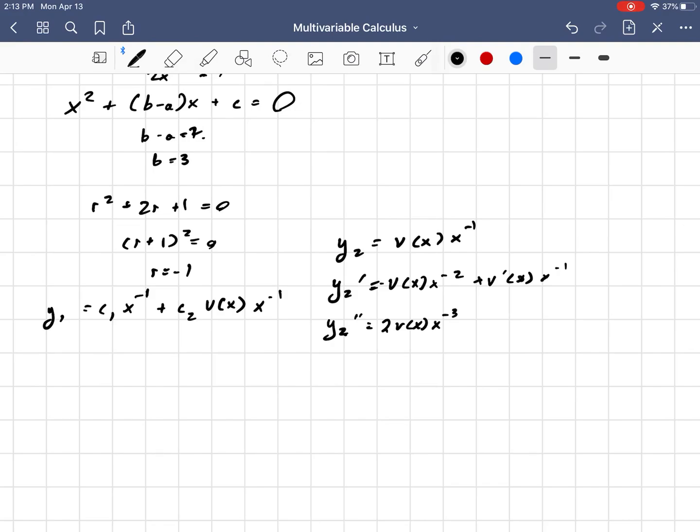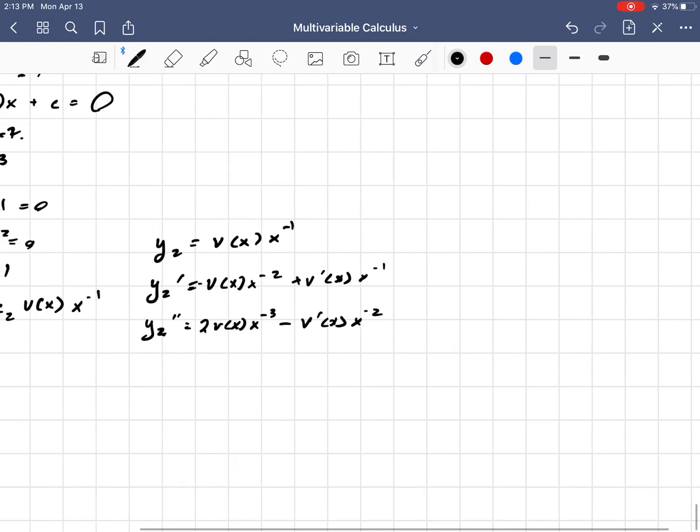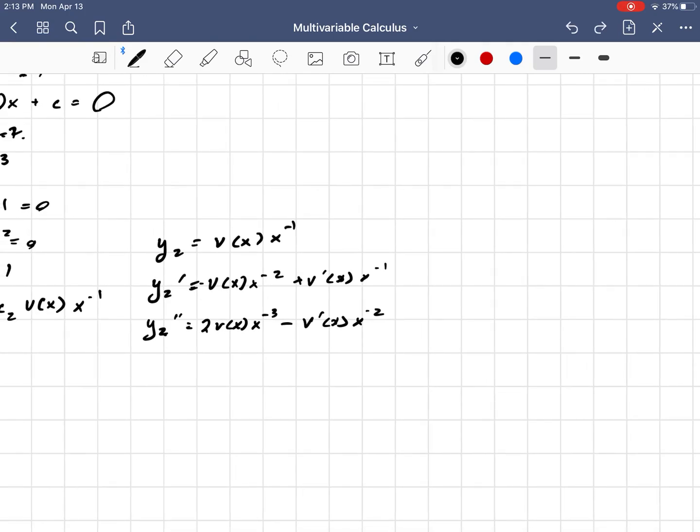Y₂'', or y₂ double prime, is 2v(x)x⁻³ - v'(x)x⁻². And that's the first part there.